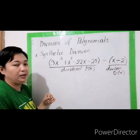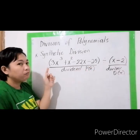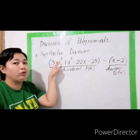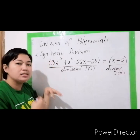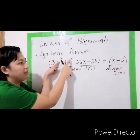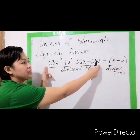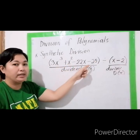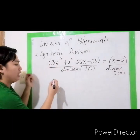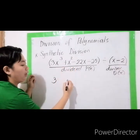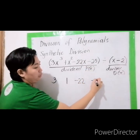Let us start dividing using synthetic division. The first thing to do is take a look at the dividend. The highest exponent here is 3, so your exponents must be complete — starting from 3, there must be raised to 2, raised to 1, and a constant. For this example, the exponents are complete. So we can now write down all the coefficients: 3, 1, negative 22, and negative 25.